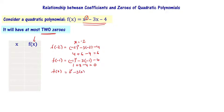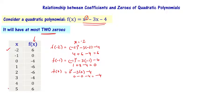For x equals 0, f of 0 equals 0 minus 0 minus 4, that is equal to minus 4. We compute different values of x and the corresponding f of x values. So f of minus 2 is 6, f of minus 1 is 0, and f of 0 is minus 4.